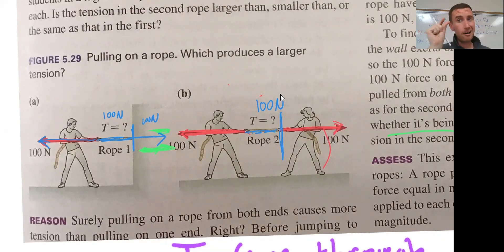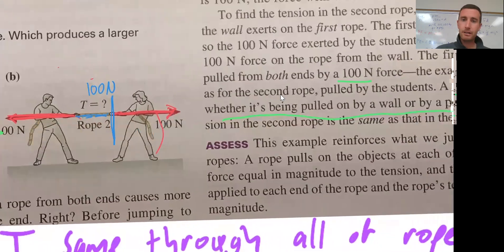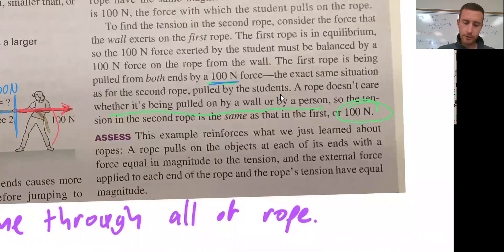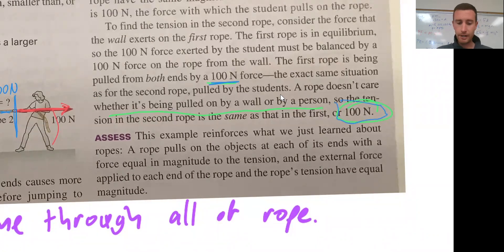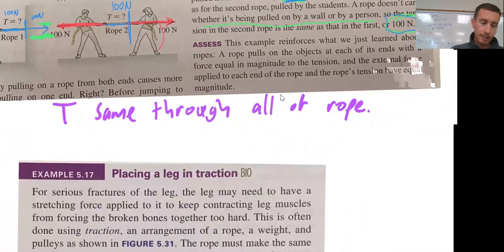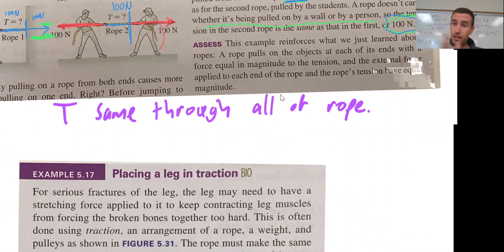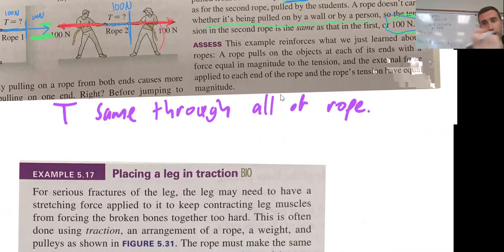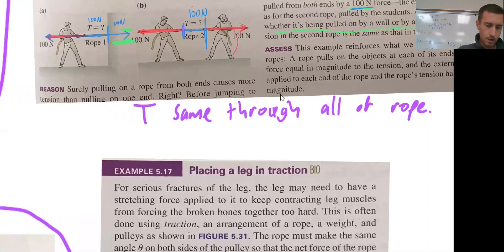I got to be honest, this part still barely makes sense to me — I understand it, but it doesn't totally fit with my conception of the world. I understand it based off of the forces being equal and opposite. If you pull from one end, it's 100 Newtons against a wall. If you pull from the other end, the person is doing the job of the wall, and it's still 100 Newtons. Another point: the tension is the same all the way through the rope. All points on the rope being pulled have tension of 100 Newtons.